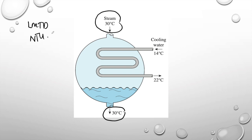Normally, if the outlet temperature is not given in the question, you may use the NTU method to determine the rate of heat transfer Q. If all the information is given, you can use either method. The LMTD method is a bit less complicated than the NTU method. In this question, I will use the LMTD method because all the temperature information for the condenser is already given.